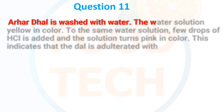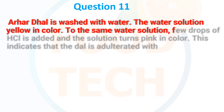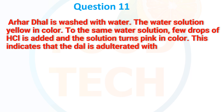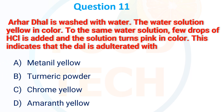Arhar dal is washed with water and the water solution turns yellow in color. To the same water solution, a few drops of HCl are added and the solution turns pink in color. This indicates that the dal is adulterated with: A. Metanil yellow, B. Turmeric powder, C. Chrome yellow, D. Amaranth yellow. The correct answer is Metanil yellow.